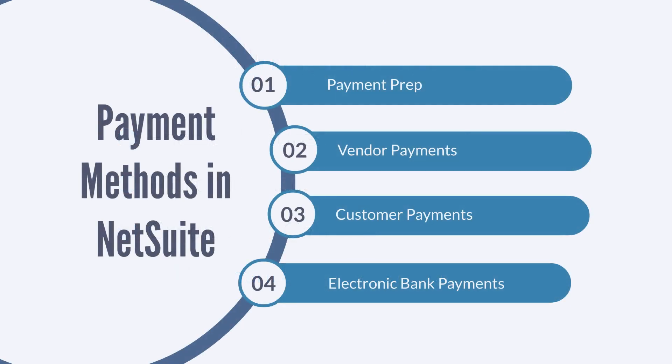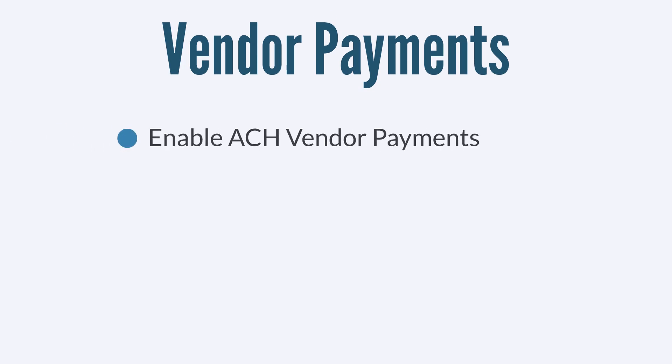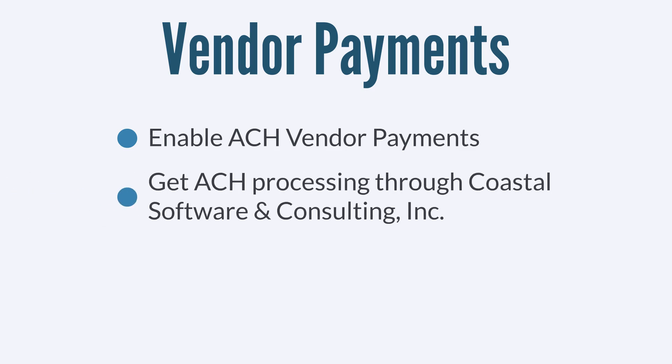Now let's look at vendor payments and customer payments. The feature you would need to enable for vendor payments is ACH — Automated Clearinghouse — vendor payments. In order to use this feature, you would need an ACH processing account, which you can acquire through Coastal Software and Consulting Inc., which is integrated with NetSuite.